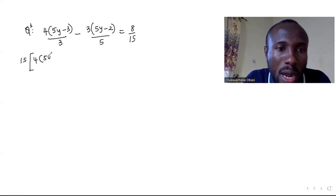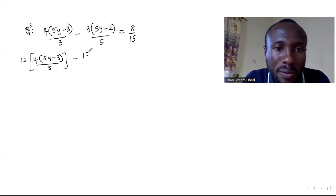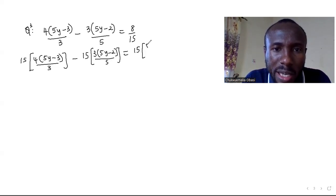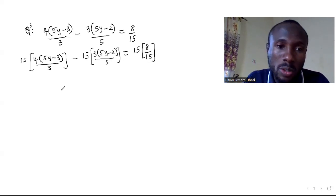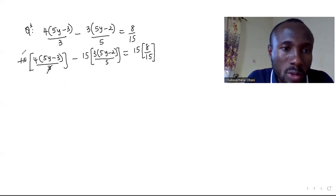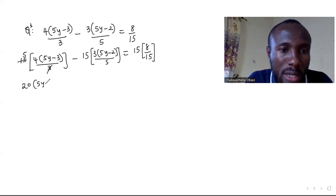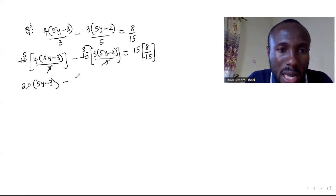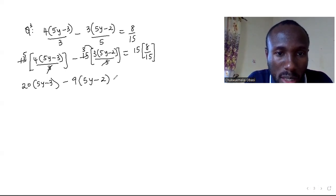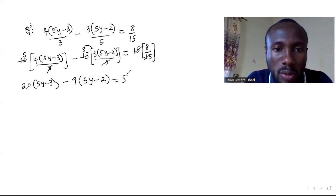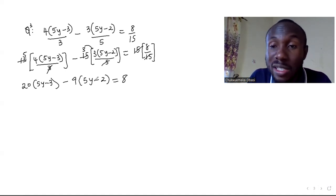Multiplying by 15: for the term with denominator 3, the 3 cancels into 15 giving 5, so you have 5 times 4 which is 20, into (5y minus 3). For the term with denominator 5, the 5 cancels into 15 giving 3, so you have 3 times 3 which is 9, into (5y minus 2). And 15 over 15 cancels leaving just 8.